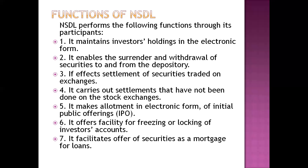NSDL makes allotment in electronic form for Initial Public Offers (IPOs). When new IPOs come, the allotment of shares is made to clients electronically by NSDL. When a company issues new securities through open advertisements and investors apply with application money, the company allots the shares. These allotted shares are electronically recorded and NSDL converts the IPO allotment into electronic form.